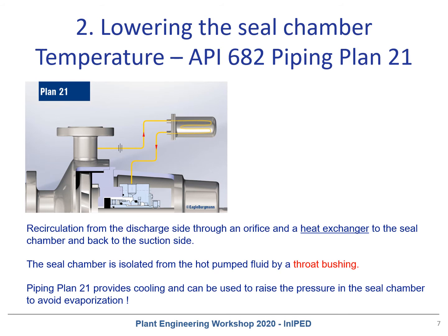Some details on option two: lowering the seal chamber temperature by piping plan 21, which is defined as recirculation from the discharge side through an orifice and a heat exchanger to the seal chamber, and then back to the suction side. The seal chamber is isolated from the hot pump fluid, ideally by a throat bushing. Piping plan 21 provides cooling and can also be used to raise the pressure in the seal chamber to avoid evaporation.